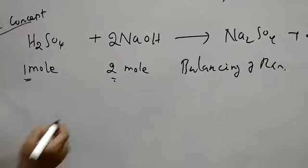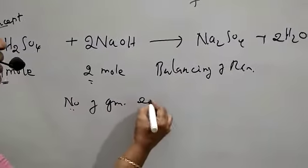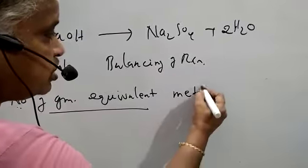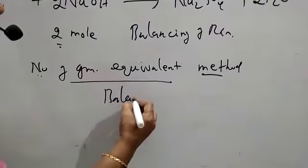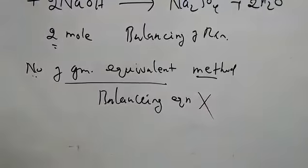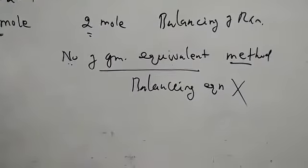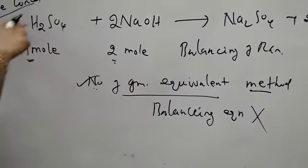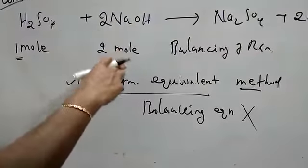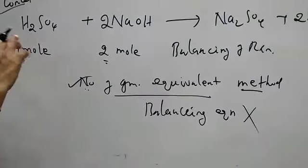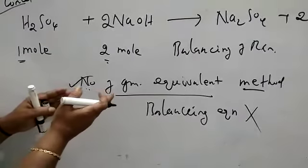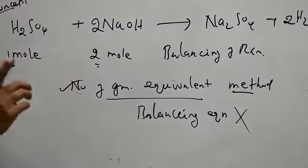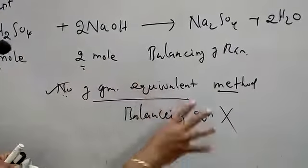We are going to use the next method called the number of gram equivalents method. In this method, balancing the chemical equation is not required. If we are talking about number of gram equivalents, the concept is: number of gram equivalents of acid should be equal to number of gram equivalents of base, or we can say number of gram equivalents of all reactants should be the same.